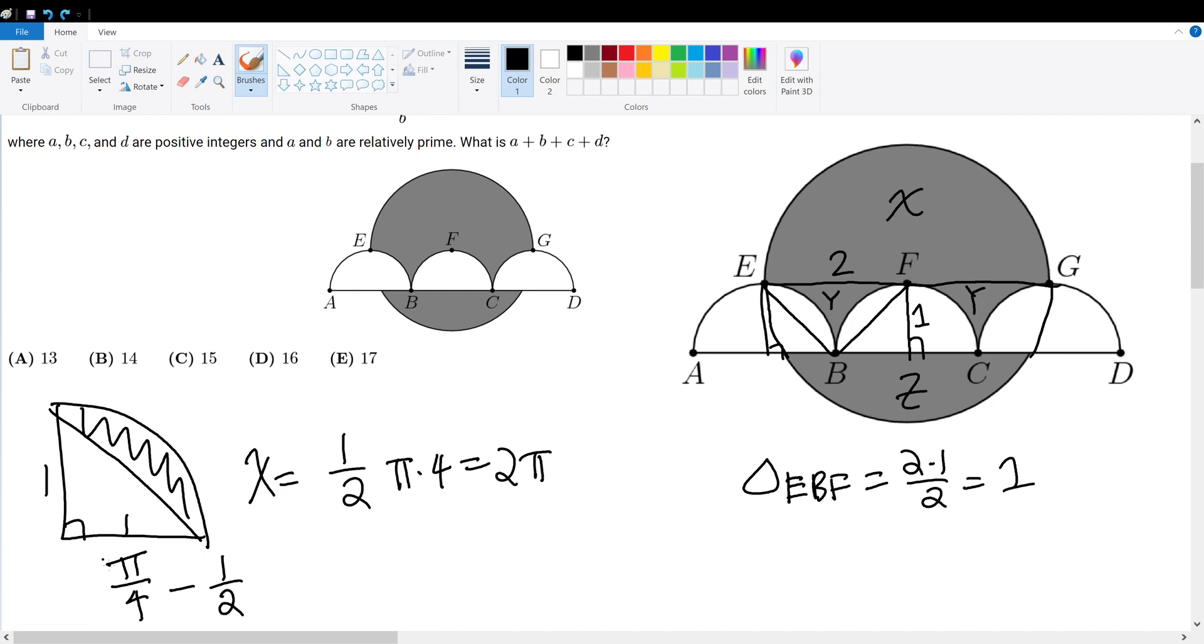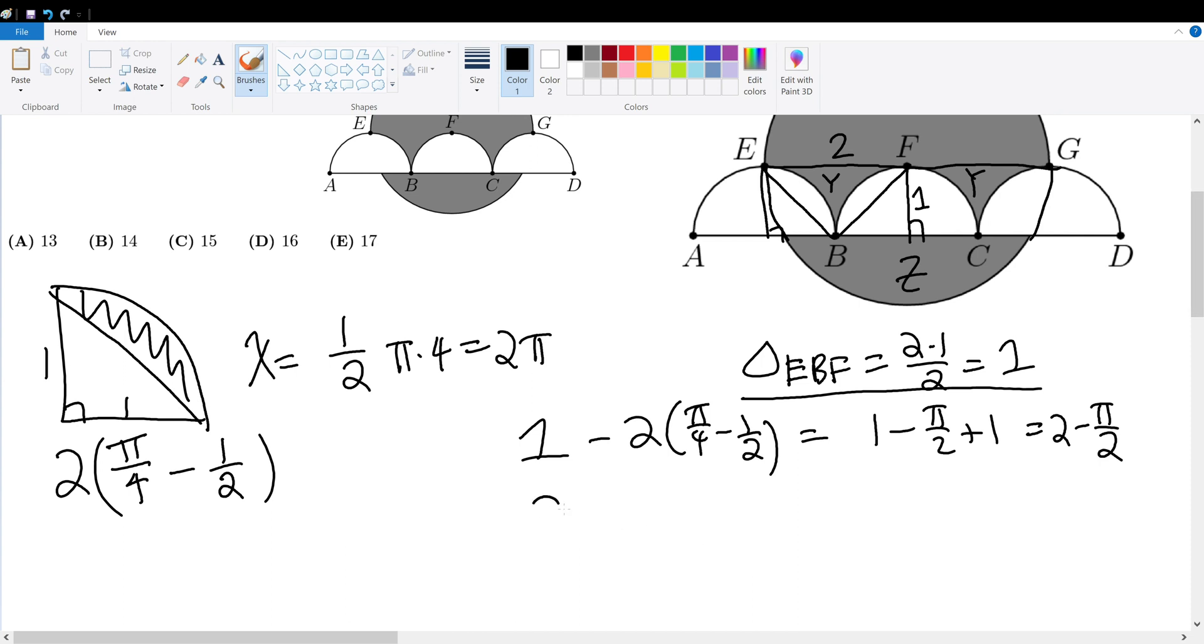But since in the isosceles triangle we have two of these shapes, we must multiply this result by 2 to give us the area of both of them combined. Since we have the area of EBF, we must subtract this from 1, so we must minus 2 times pi over 4 minus one-half. Which, if we simplify, will be equal to 1 minus pi over 2 plus 1, which is 2 minus pi over 2. But since we have two y's, that means 2y will be equal to 2 times 2 minus pi over 2, which equals 4 minus pi. So that's the area of both y's combined.